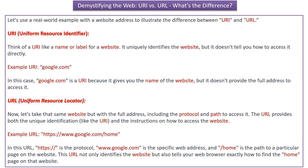URL is nothing but Uniform Resource Locator. Now let us take the same website but with the full address including protocol and path to access it. The URL provides both unique identification and the instruction on how to access the website. Here you can see the example of URL. In this URL, HTTPS is the protocol, www.google.com is the specific web address, and /home is the path to the particular page on the website. This URL not only identifies the website but also tells your web browser exactly how to find the homepage on that website.